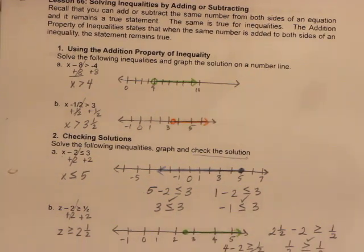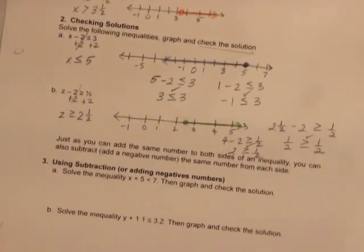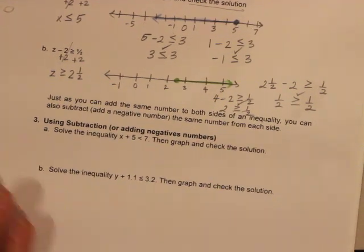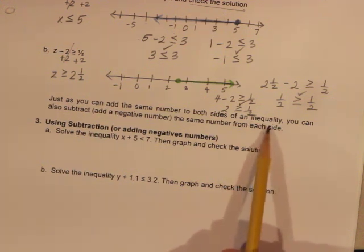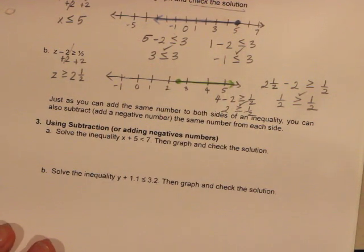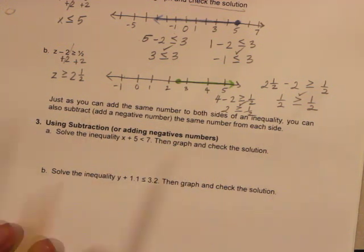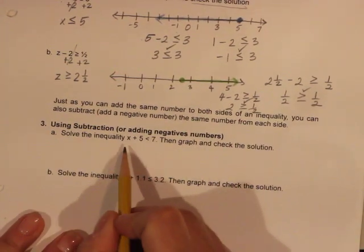Now, just as we can add the same number to both sides of an inequality — which we just proved — we can also subtract, which is the same as adding a negative number. The truth value remains the same. This is quite simple.